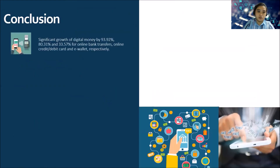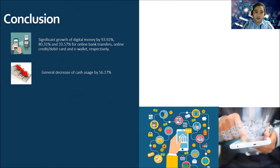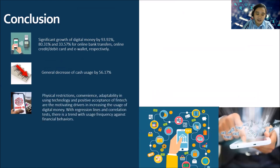In conclusion, the significant growth of digital money is seen at 93%, 80%, and 33% for online bank transfers, online credit and debit card, and e-wallet, respectively. There is a general decrease in cash usage of 56.17%. Physical restrictions, convenience, adaptability in using technology, and positive acceptance of fintech are the motivating drivers increasing digital money usage. With regression lines and correlation tests, there is a trend between usage frequency and financial behaviors.